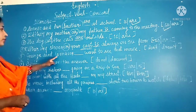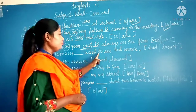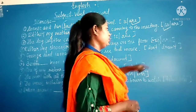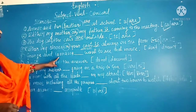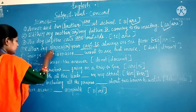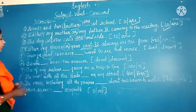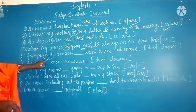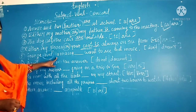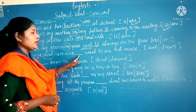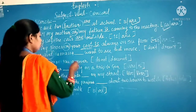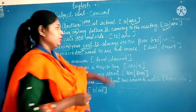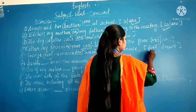The next sentence: 'George and Tamanna ___ want to see that movie.' The options are 'do not' and 'does not.' Here 'and' joins George and Tamanna, making it a compound subject representing plural number. So the plural verb form — 'do not' — will be used. George and Tamanna do not want to see that movie.